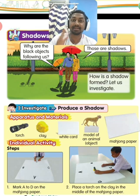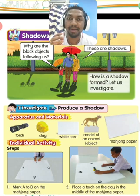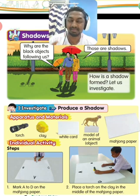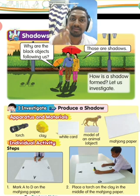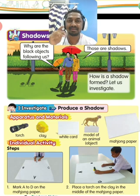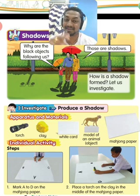So what kind of object is that? That is called an opaque object. We will see what is opaque object, what is transparent object, and what is translucent object in a while.